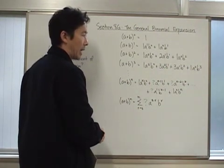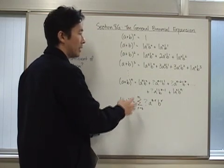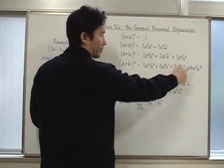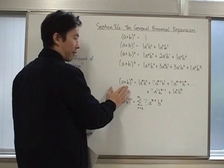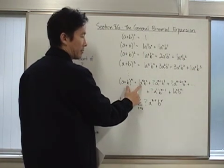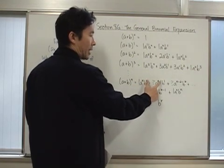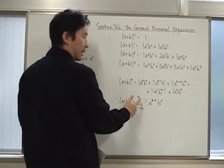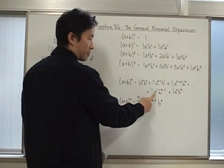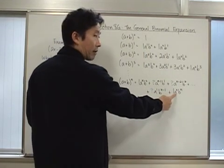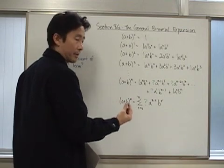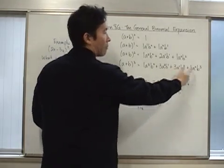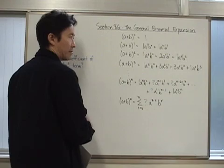If we take a look at the values of a in the expansion, notice that it started off with a to the third, then a to the second, a to the first, a to the zero. Now, if I do that for n, the first term is going to have a to the n, the second term a to the n minus one, the third term a to the n minus two, continuing on until you get to the n-plus-one-th term where this would be just a to the first, and then a to the zero. When it came to the b exponents for each of the terms, notice that it started off with zero and went up by one for each consecutive term.